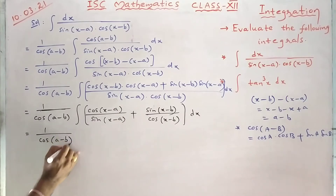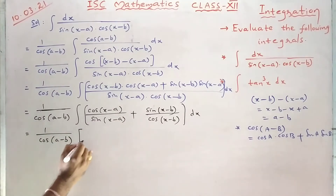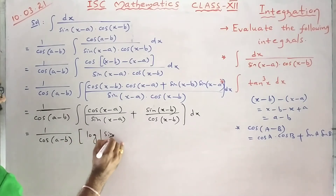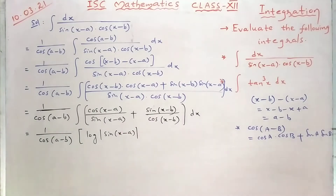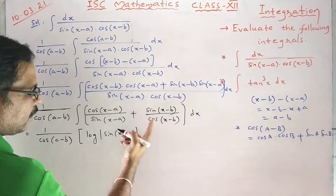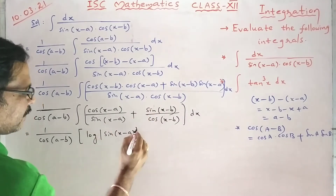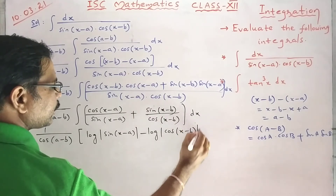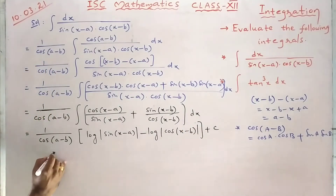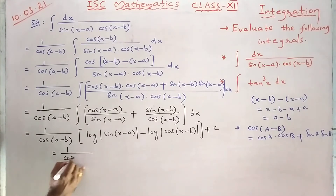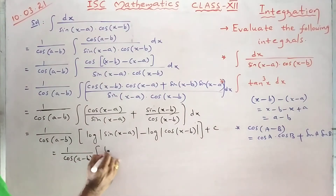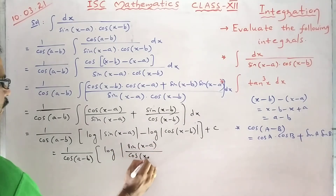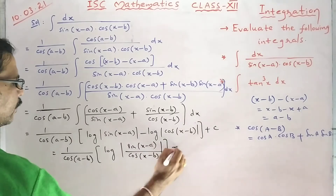1 by cos(a minus b). This looks like the form c·f'(x)/f(x) clearly. So I can write log mod sin(x minus a). But for the second term, since the derivative of cos is minus sin, I am taking minus log mod cos(x minus b). Then log a minus log b gives us 1 by cos(a minus b), and it looks like log(a/b) — that is, sin(x minus a) by cos(x minus b).